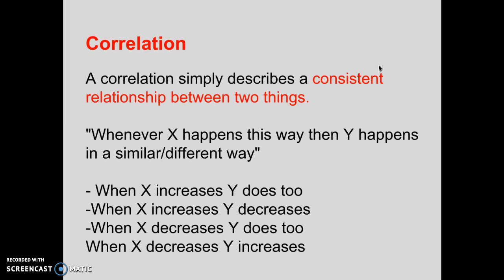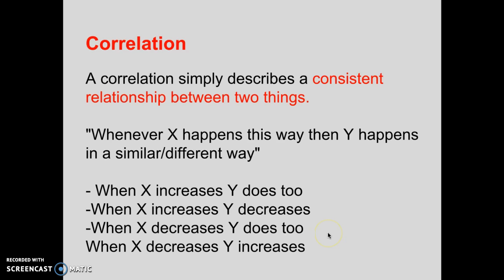A correlation simply describes a consistent relationship between two things. A lot of times when I see the word correlation being thrown around in essays and the like, you usually mean that the connection is stronger than what the word usually entails. Really, it only means that whenever x happens in a certain way, then y happens in a similar or different way — when x increases, y does too, or maybe it decreases. It's a consistent movement that occurs between two things.